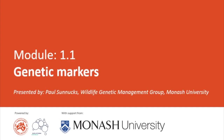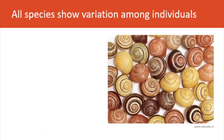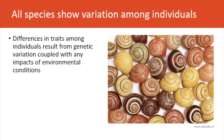This is module 1.1, Genetic Markers. All species show variation among individuals, such as the appearance of these snails. Differences in such traits among individuals can result from genetic variation, coupled with any impacts of environmental conditions.